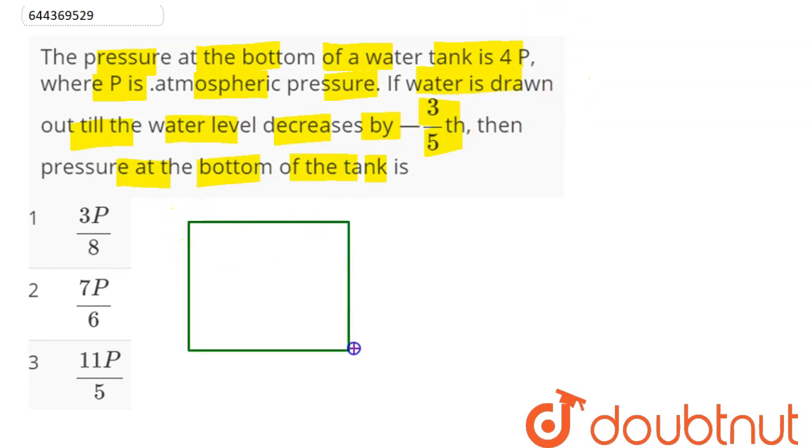So here we can say, suppose this is our water tank. In this water tank, pressure at the bottom is given as 4P, where P is the atmospheric pressure. Height of this water tank is given as capital H. This 4P can be written as pressure at the bottom of the tank.